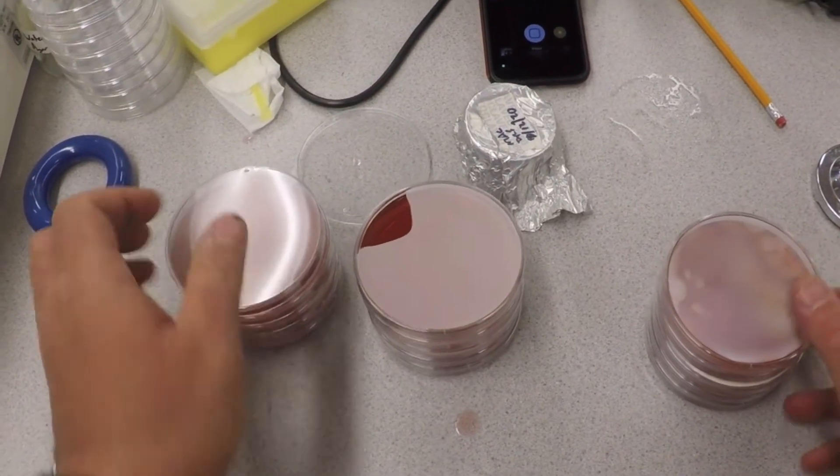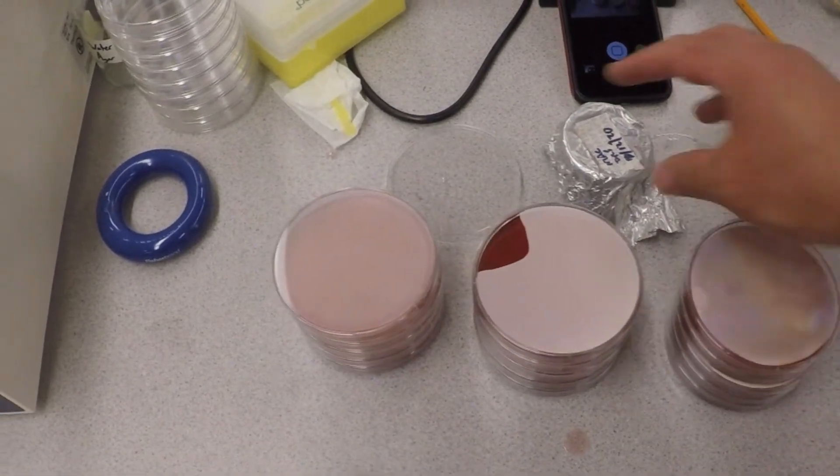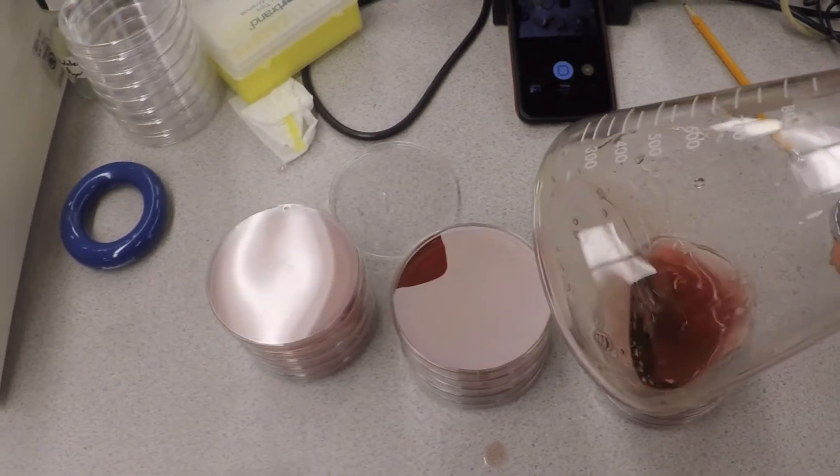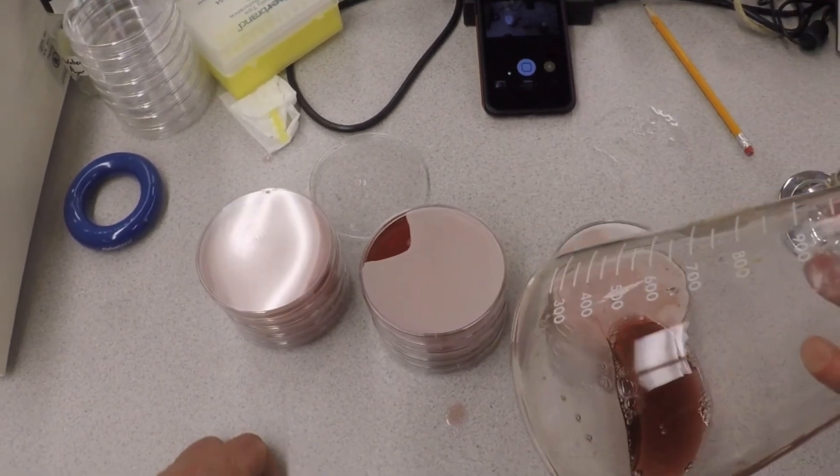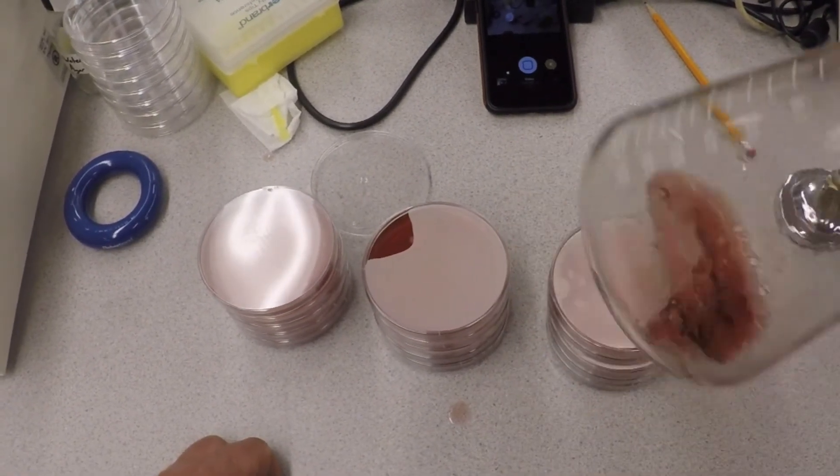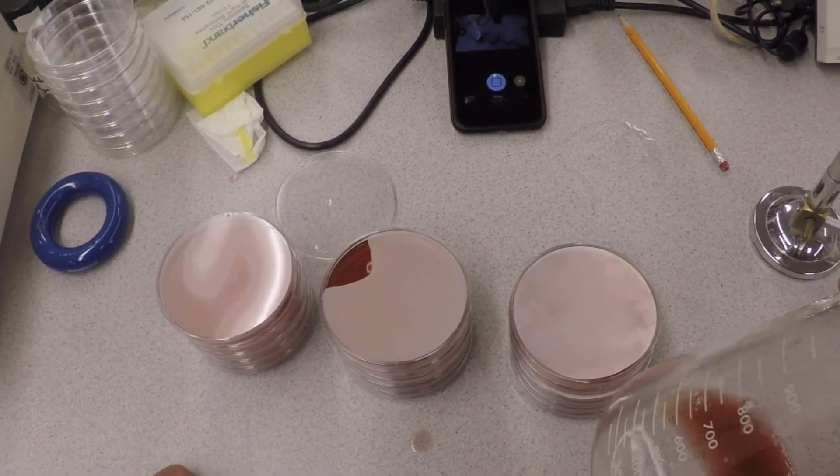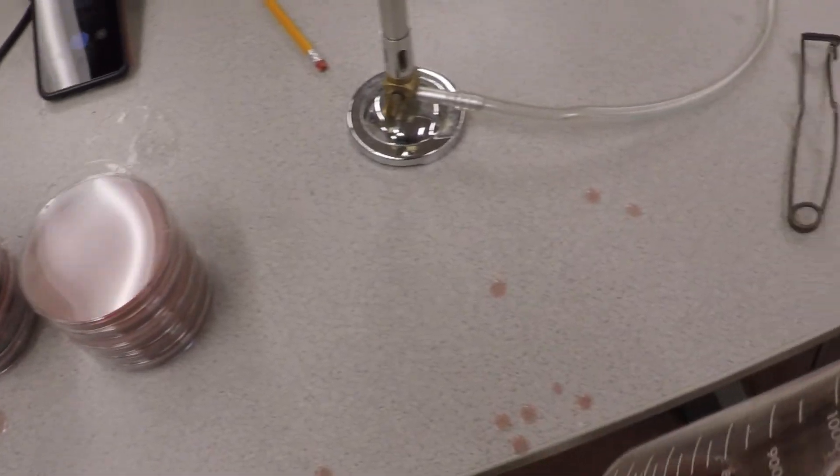Now you just let these babies solidify on the bench. Put some water in this thing before it solidifies—you don't want to pour this down the sink because it'll solidify in the drain, and that's a problem. Ask me how I know.